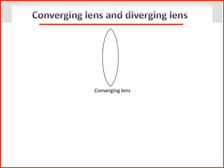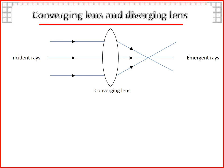Converging lens: when a beam of light is incident on a converging lens, the emergent rays converge.